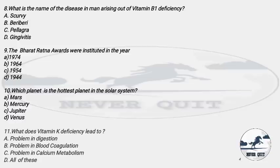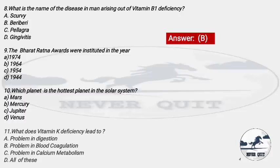Question 8: What is the name of the disease in humans arising out of Vitamin B1 deficiency? Options: A) Scurvy, B) Beriberi, C) Pellagra, D) Gingivitis. The right answer is option B — Beriberi. This disease causes considerable weakness. As a homework, tell me in the comments what the chemical name of Vitamin B1 is, as it can be asked in exams.